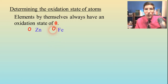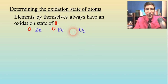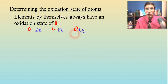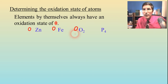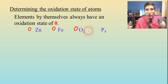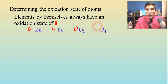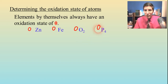So don't let that fool you. Oxygen the same way — when it's plain oxygen gas, that's a charge of zero. Or we have multi-atomic elements like phosphorus — phosphorus is still zero because it's an element hanging out by itself.